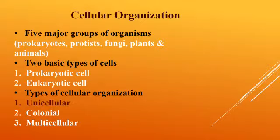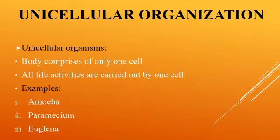We will study the difference between these two cells and their characteristics later on in this book. Now, moving towards today's topic — the types of cellular organization. There are three main types: unicellular, colonial, and multicellular. Today we are going to understand unicellular organization.